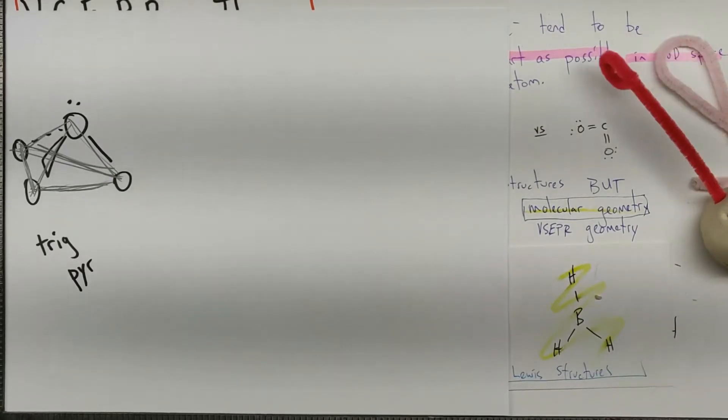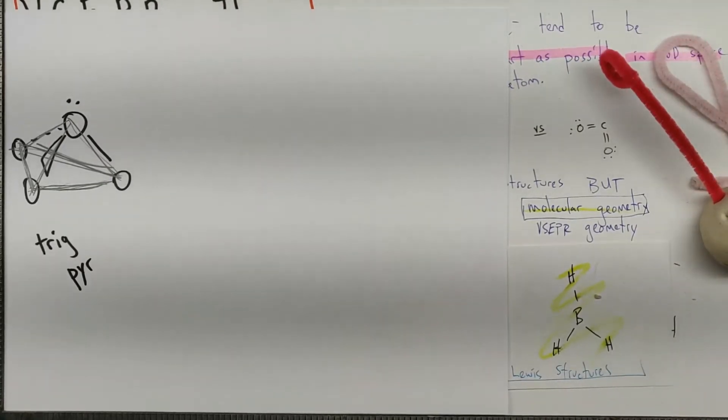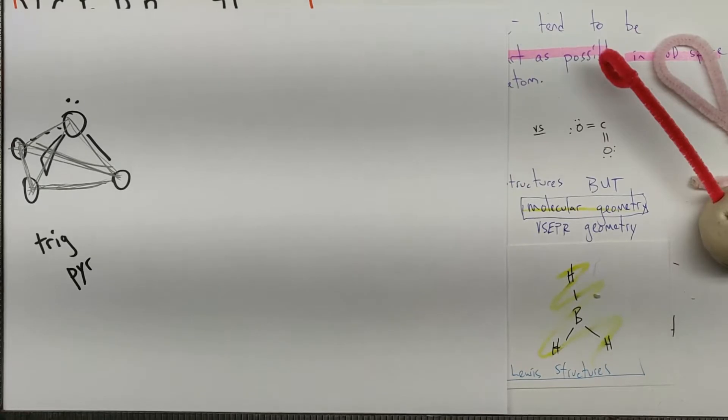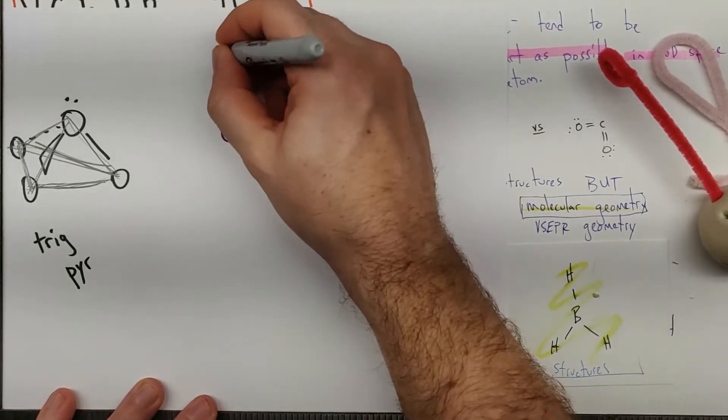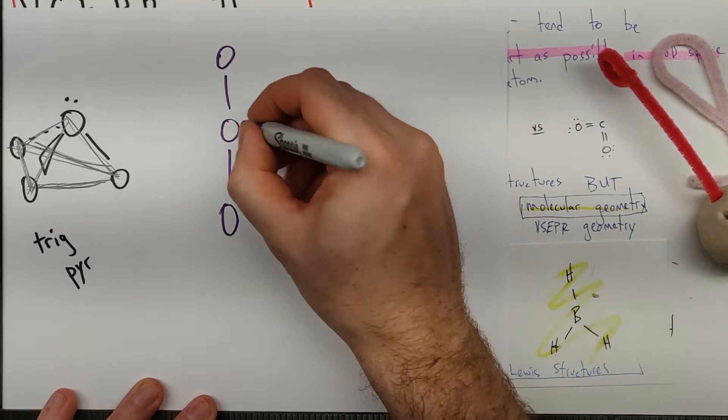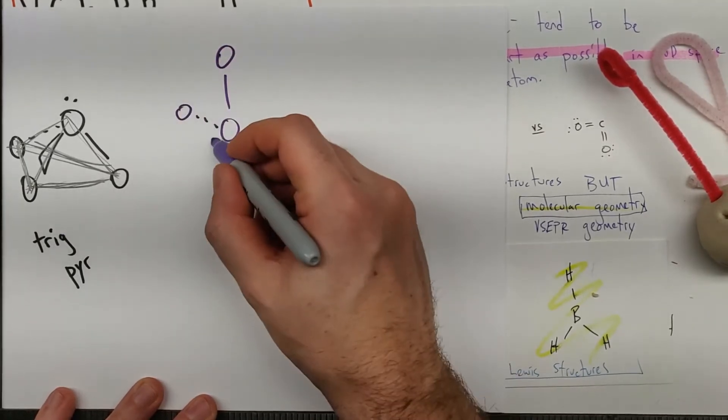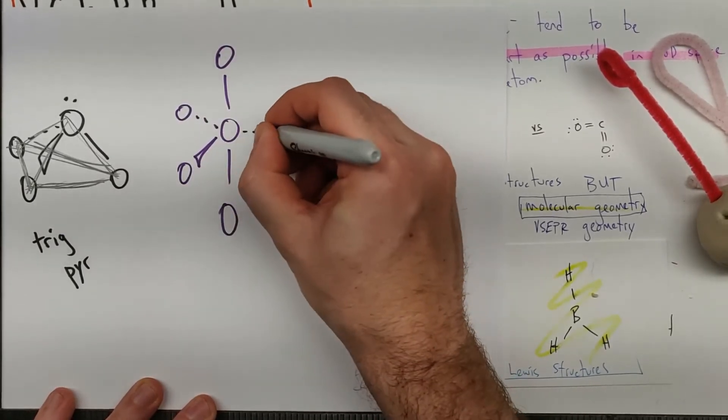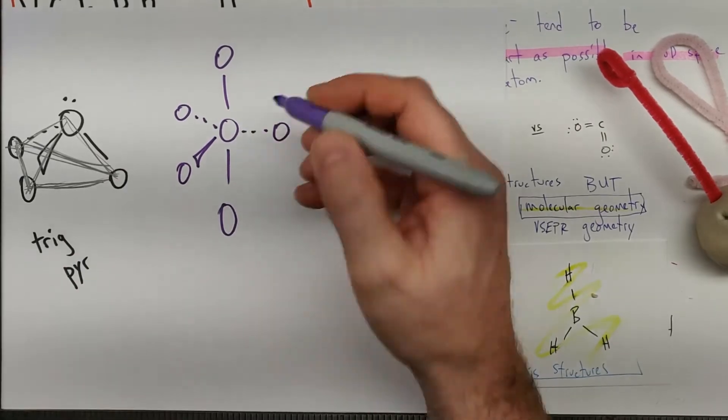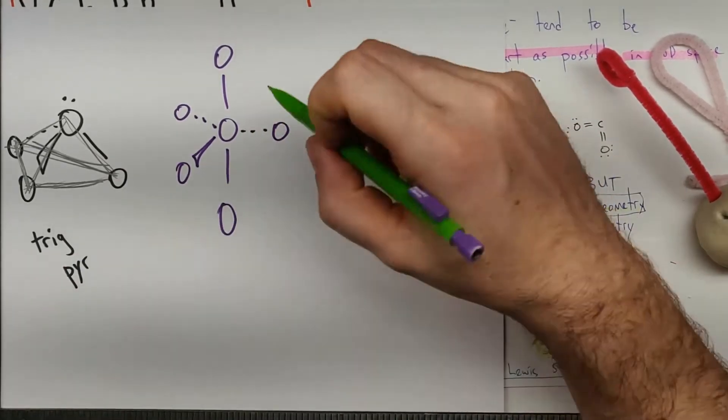And then we can move up to trigonal bipyramidal, which I think may make sense once you see it. We had a central atom, one above, one below, into the page, out of the page, on the plane of the page.